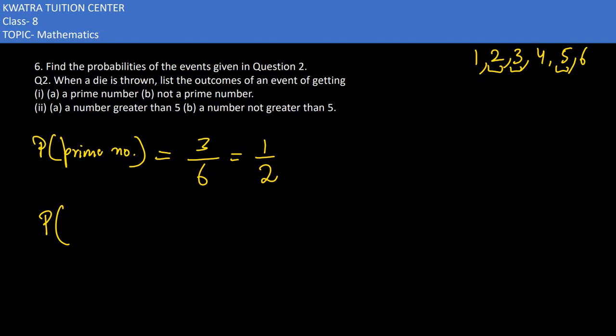The second part says not a prime number. The numbers that are not prime would be 1, 4, and 6. How many are there? 3. So the probability is 3/6, which equals 1/2.